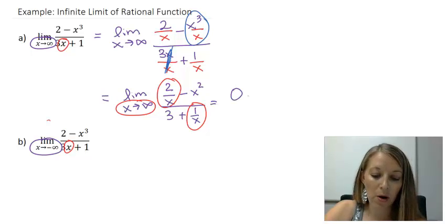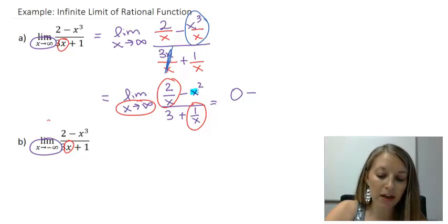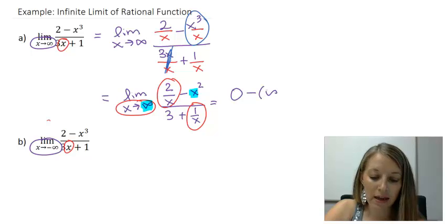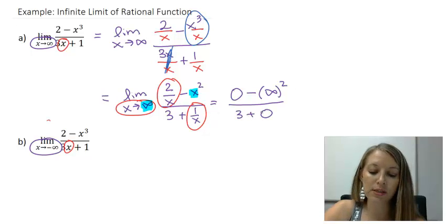So this is 0 minus, now this x, that's the only x I really have anything left for, and I do actually have to plug in infinity there. So minus an infinity squared over, I have my 3 left, plus, and I already said this 1 over x reduces down to 0.